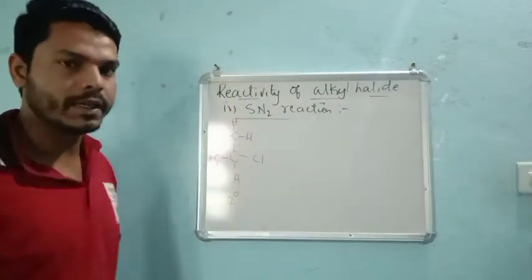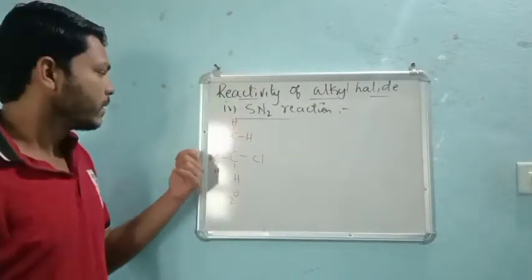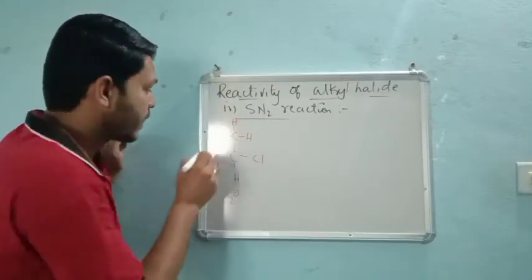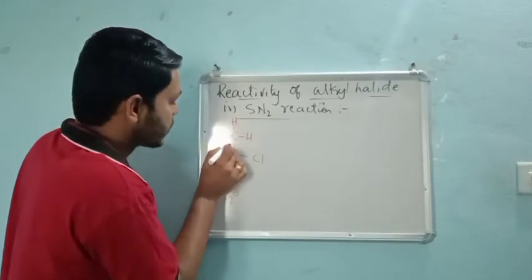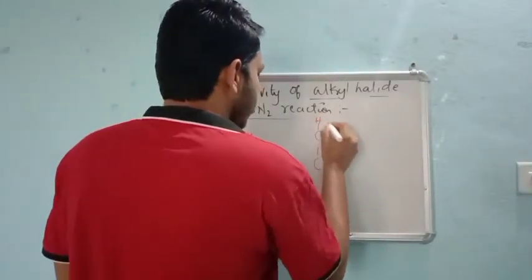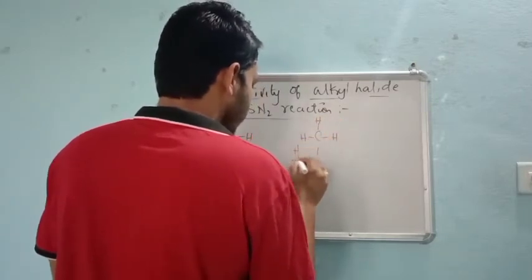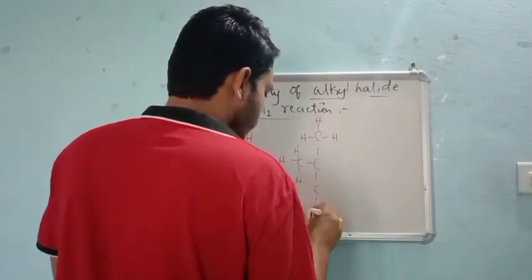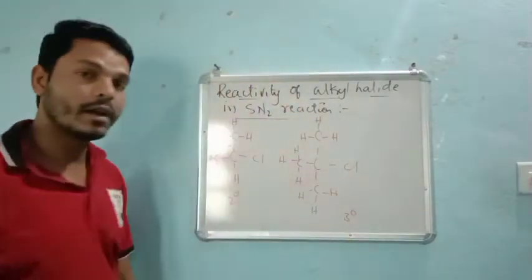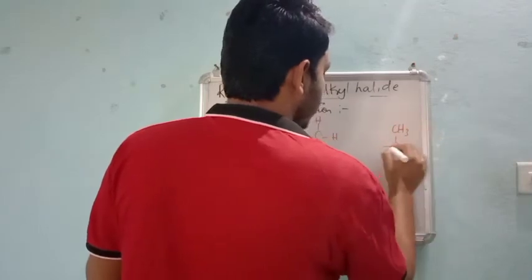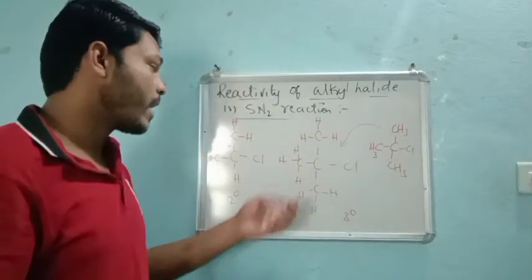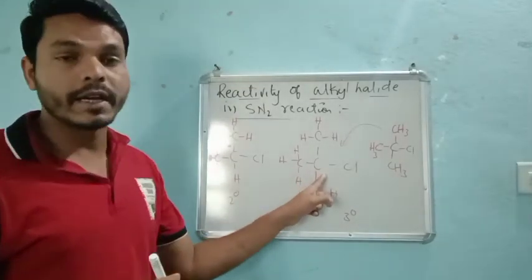Now coming towards secondary alkyl halide — see the condition. In secondary, I again need to attack from the back side. Now observe how much space is left to attack with OH. As I increase the degree — moving to tertiary — you can imagine the compound. In tertiary, there are three alkyl groups around the central carbon to which the halogen is attached, making it very crowded.